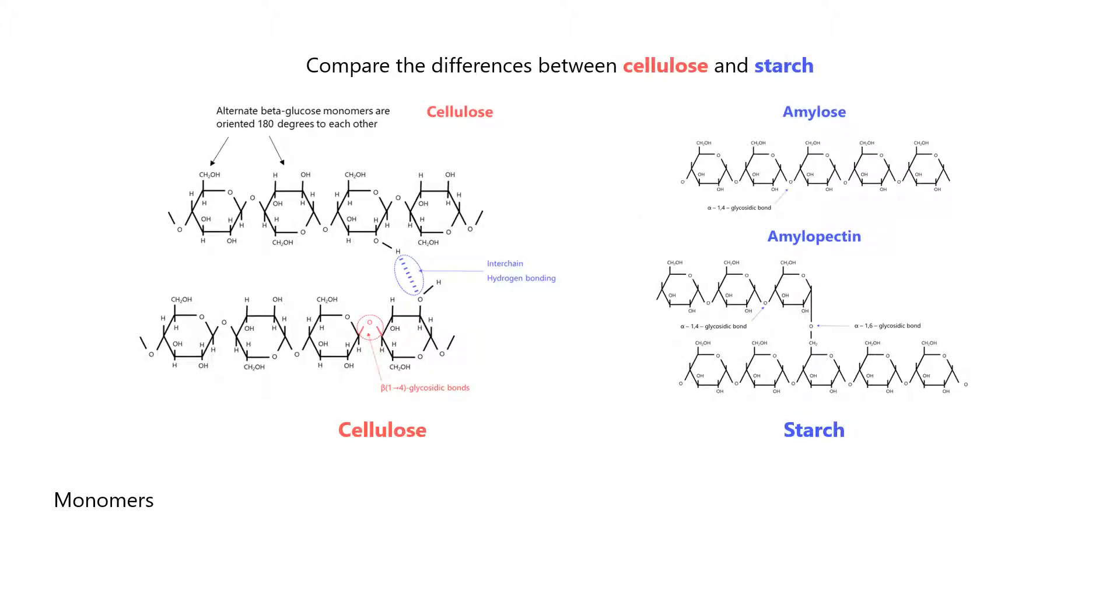First, let's look at their structures. Let's compare their monomers first. Cellulose is made of beta-glucose monomers. Starch is made of alpha-glucose monomers.